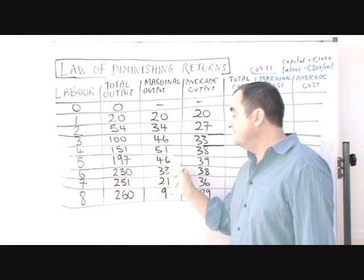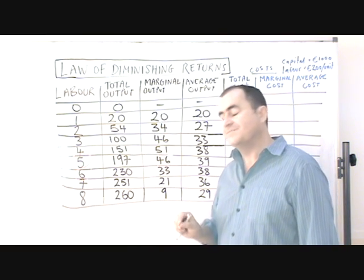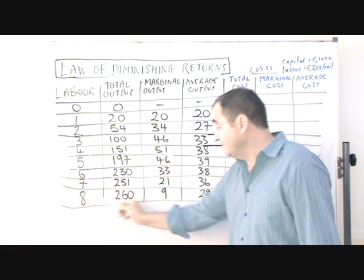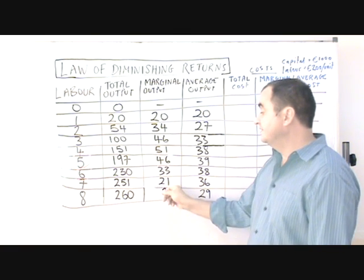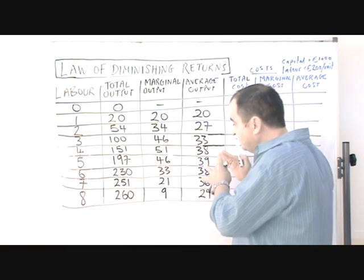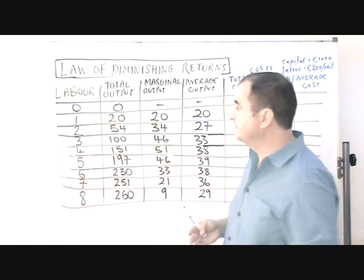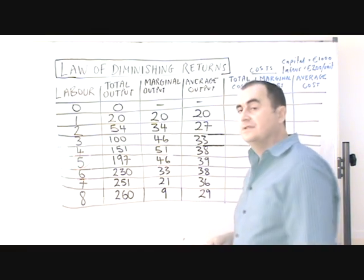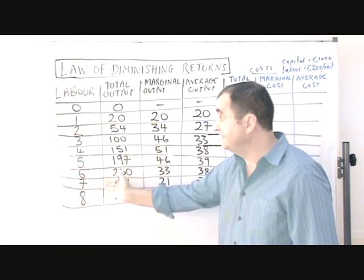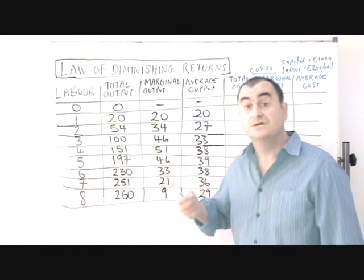So the average starts to fall when the marginal is less than the average. Eventually, if they were adding more and more workers, total output might even fall and the marginal output would be negative. Clearly, this has an impact on costs for firms. These are output numbers demonstrating the onset of diminishing marginal returns, followed by diminishing average returns, and eventually, if they keep adding the variable factor of production, total output would fall — diminishing total returns.